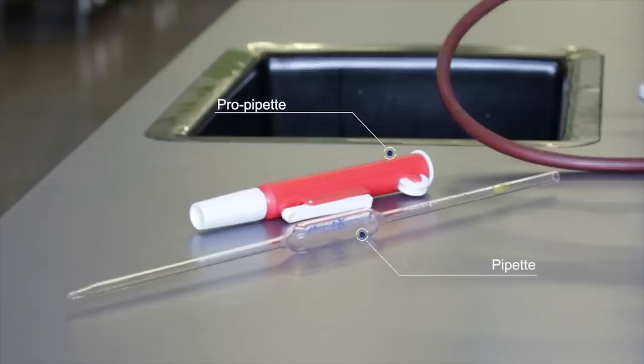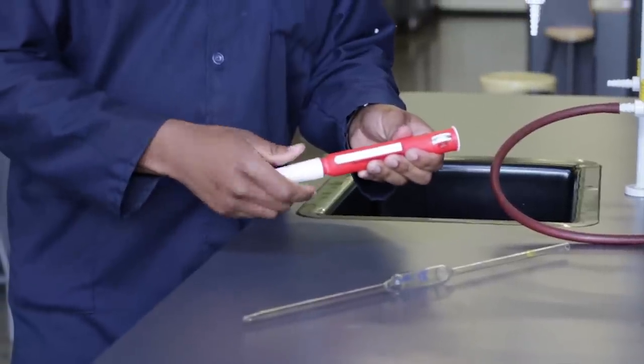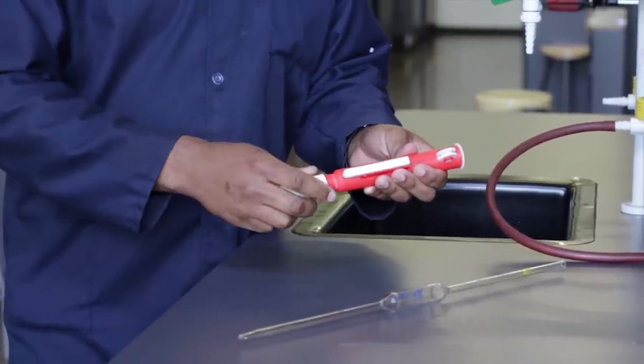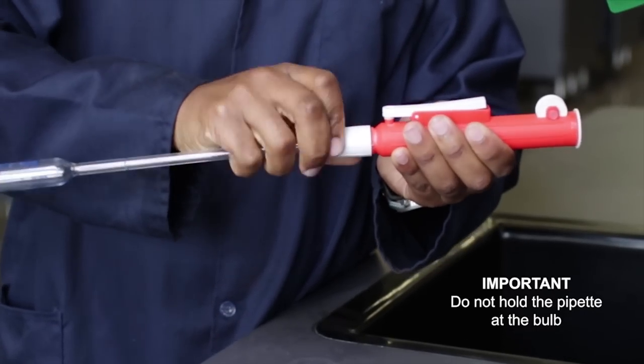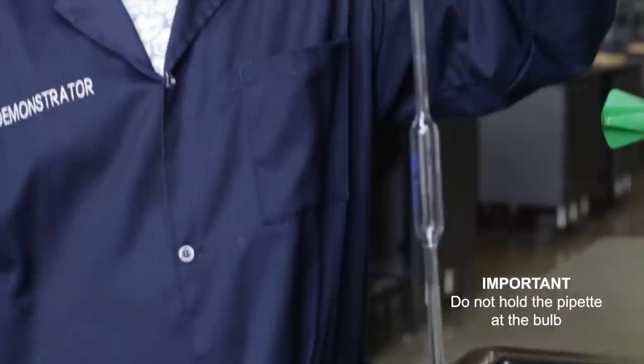The pipette is first fitted with the pro pipette or pipette filler. This is done by loosening the white end of the pro pipette and inserting the pipette into the pro pipette to about 2cm by using a gentle twisting motion and the white end is tightened.